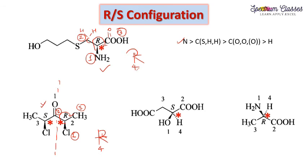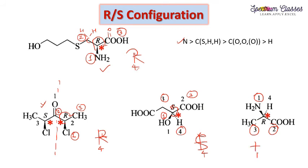For the next molecule, the fourth priority group is explicitly shown. First priority, second priority, third priority, and fourth priority are assigned. Since the fourth priority group is on the dashed wedge, I consider it on the vertical line. Rotating 1, 2, 3 gives anticlockwise rotation, so the configuration is S. For the following molecule: first, second, third priority groups assigned; the fourth is on the dashed wedge, rotation is clockwise, so the configuration is R.